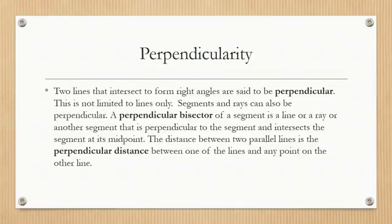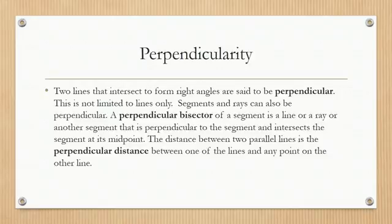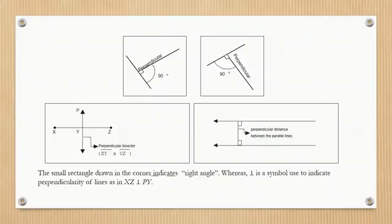Perpendicularity: Two lines that intersect to form right angles are said to be perpendicular. This is not limited to lines only — segments and rays can also be perpendicular. A perpendicular bisector of a segment is a line, ray, or another segment that is perpendicular to the segment and intersects it at its midpoint. The distance between two parallel lines is the perpendicular distance between one of the lines and any point on the other line. Note that the small rectangle drawn in the corner indicates a right angle.